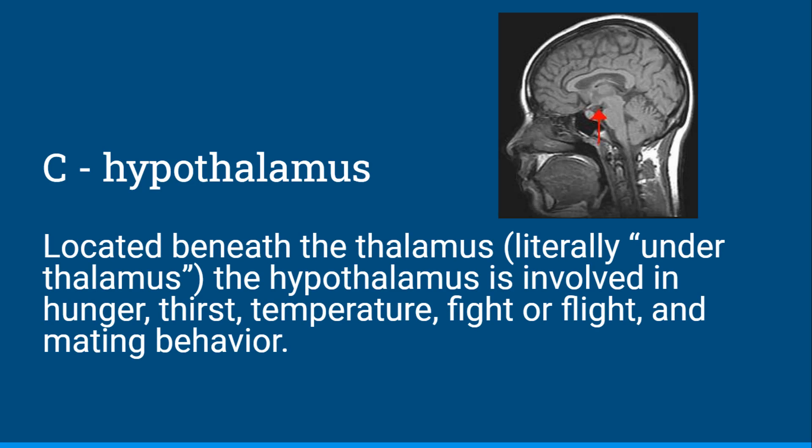The hypothalamus is located beneath the thalamus — it literally means 'under thalamus' — and it's involved in motivations related to hunger, thirst, body temperature regulation, the fight-or-flight response, and mating behavior. It also influences the pituitary gland and causes it to release hormones that can influence other glands in the body.